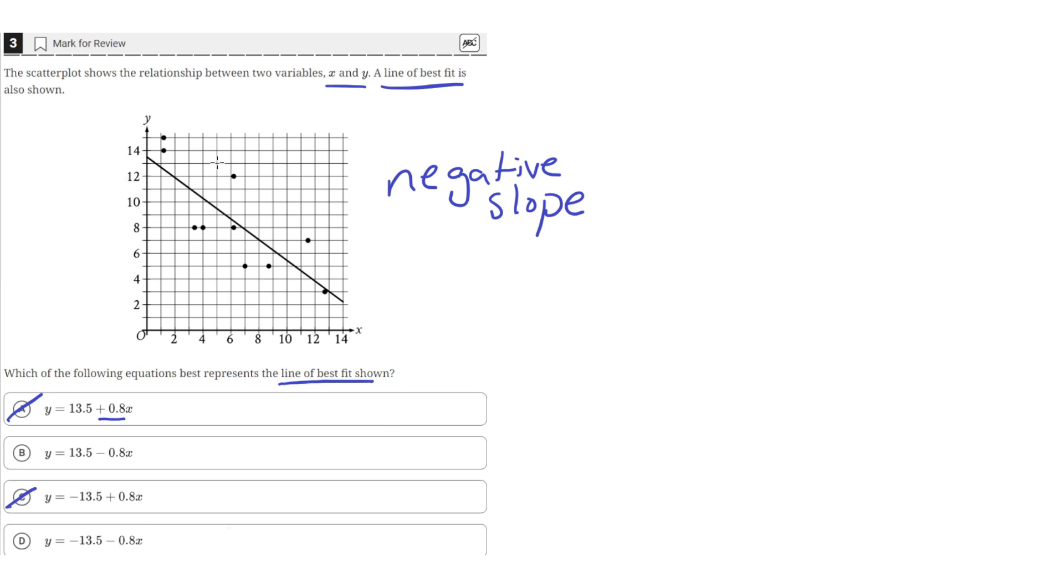Now let's look at the y-intercept. The y-intercept is where the line crosses the y-axis. The y-axis is this vertical axis here. And it seems to cross the y-axis at right about here. It looks to be about 13.5. And this is a positive 13.5.